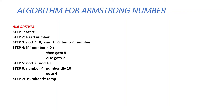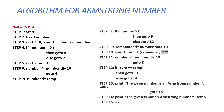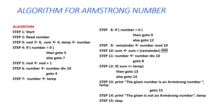In Step 6, number is assigned number divided by 10, then it moves back to Step 4 and checks the condition again. This loop continues until the condition fails. Once it fails, it moves to Step 7 where number is copied back from the variable temp, then moves to Step 8 where it again checks the condition: if number is greater than 0.